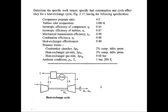In the last class we discussed a few configurations of the cycle and we left two numericals which we are going to discuss in this class. The problem statement says: determine the specific work output, specific fuel consumption, and the cycle efficiency for the heat exchange cycle shown here, having the following specifications.